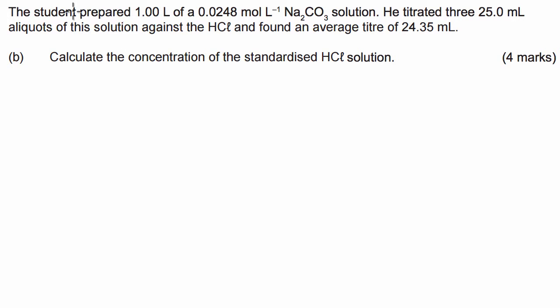So let's read through the question. The student prepared 1.00 L of a 0.0248 mol L⁻¹ Na₂CO₃ solution. He titrated three 25.0 mL aliquots of this solution against the HCl and found an average titre of 24.35 mL. Calculate the concentration of the standardised HCl solution.